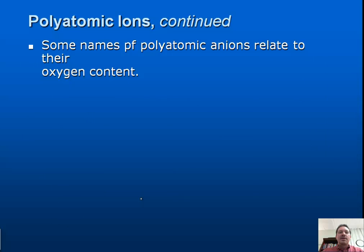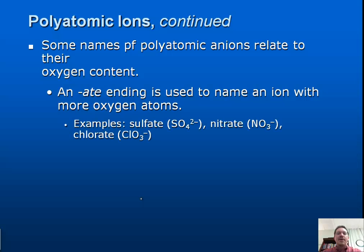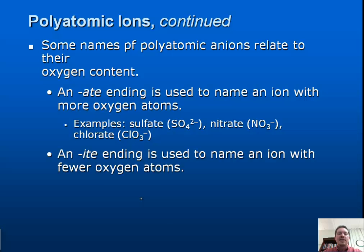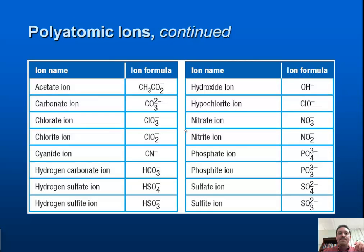Some names of polyatomic anions relate to their oxygen content. The -ate ending names an ion with more oxygen atoms: SO4 is sulfate, NO3 is nitrate, ClO3 is chlorate. The -ite ending names an ion with fewer oxygen atoms: SO3 is sulfite, NO2 is nitrite, ClO2 is chlorite. By changing the number of oxygens, the name changes — though further variations in oxygen count won't be covered in this course.